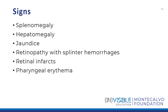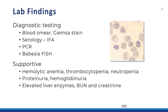Physical exam findings are consistent with the known pathophysiology. Removal of infected erythrocytes by splenic macrophages can result in splenomegaly and hepatomegaly, and rapid hemolysis of red blood cells can lead to jaundice. Capillary blockages by Babesia aggregates and fragmented red cells can produce retinal infarcts and hemorrhages. Identification of Babesia organisms on a blood smear is definitive laboratory evidence of a current infection. Positive results for Babesia serology, PCR, and fluorescent in-situ hybridization (FISH) are also diagnostic. Supportive findings include evidence of hemolytic anemia, thrombocytopenia, and neutropenia. Rapid destruction of erythrocytes may lead to proteinuria, hemoglobinuria, elevated BUN, creatinine, and liver enzymes.